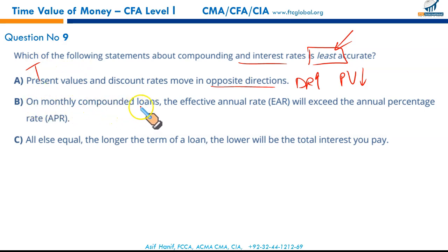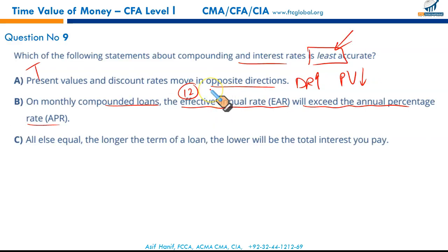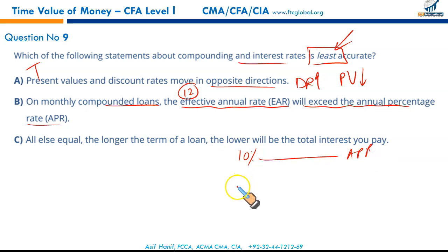Statement B: on monthly compounded loans, the effective annual rate (EAR) will exceed the annual percentage rate — yes, because monthly compounding means twelve compounding periods per year. Let's verify with an example: 10% APR compounded monthly. Using ICONV: nominal = 10, frequency = 12, CPT — gives 10.47%. EAR exceeds APR. Statement B is correct.